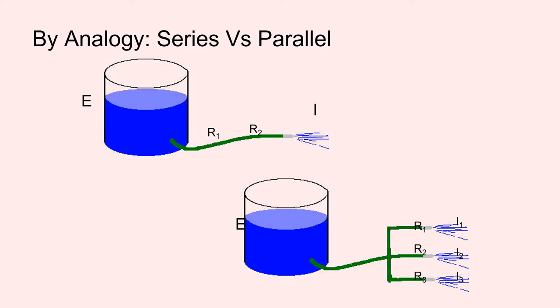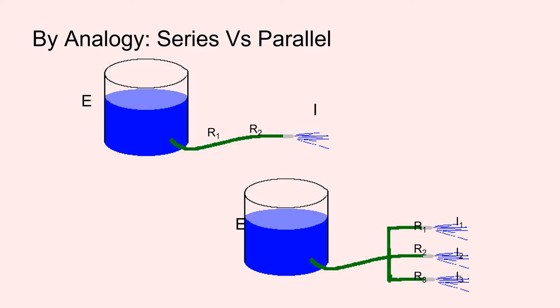We will use a water analogy to help explain this. On the top left we have a water tank and hose with two resistors in series — each resistor adds further resistance to the flow of water. On the bottom right is a water tank with three resistors in parallel. Each time I add another resistor in parallel I am adding another path for current to flow, lessening the total resistance of the current flow.